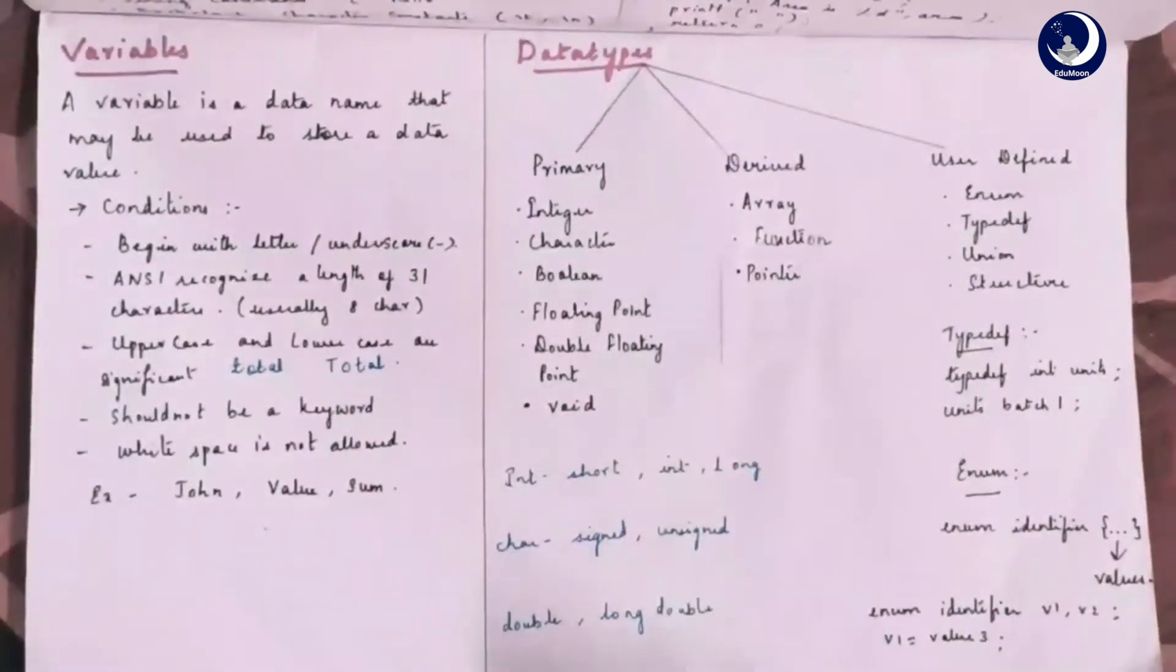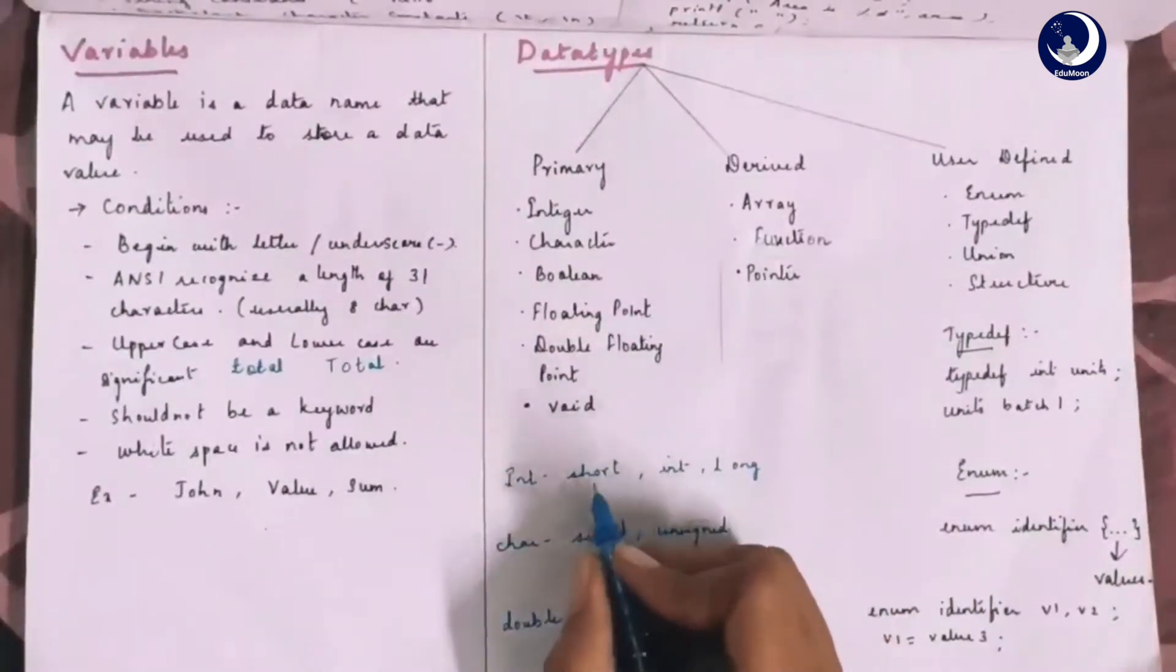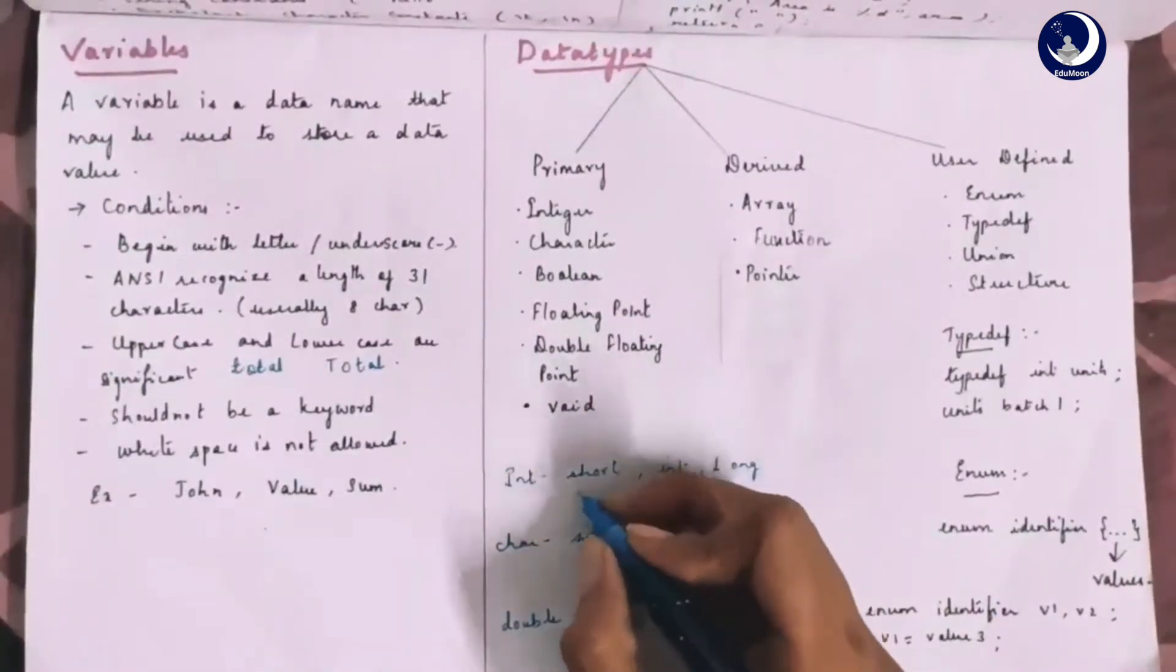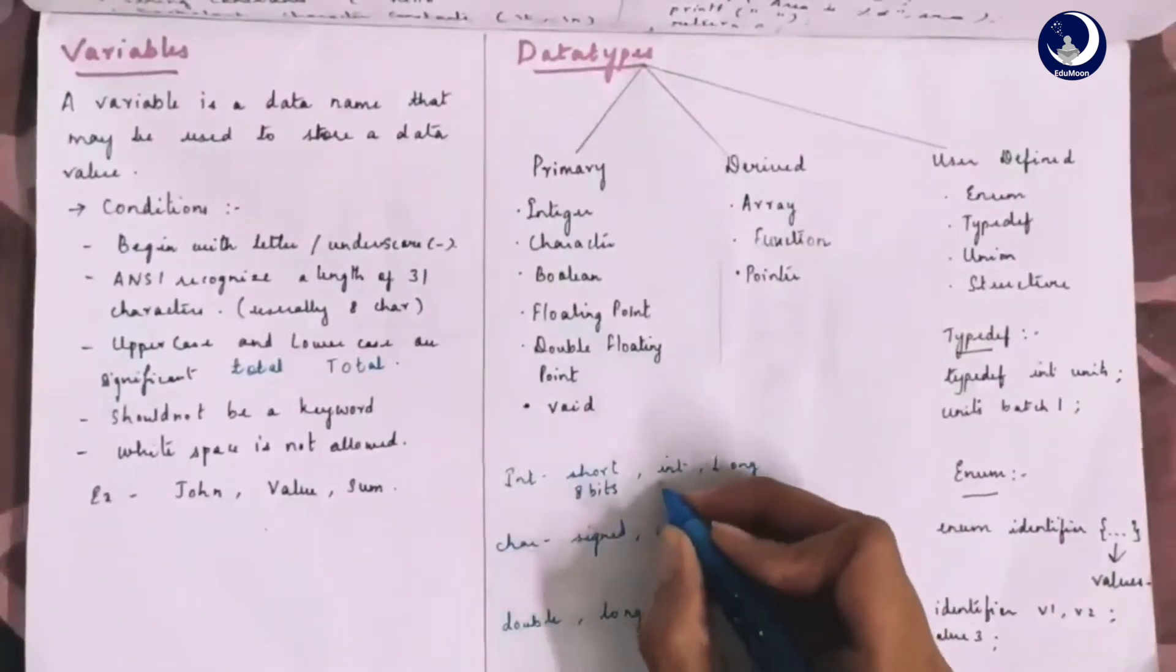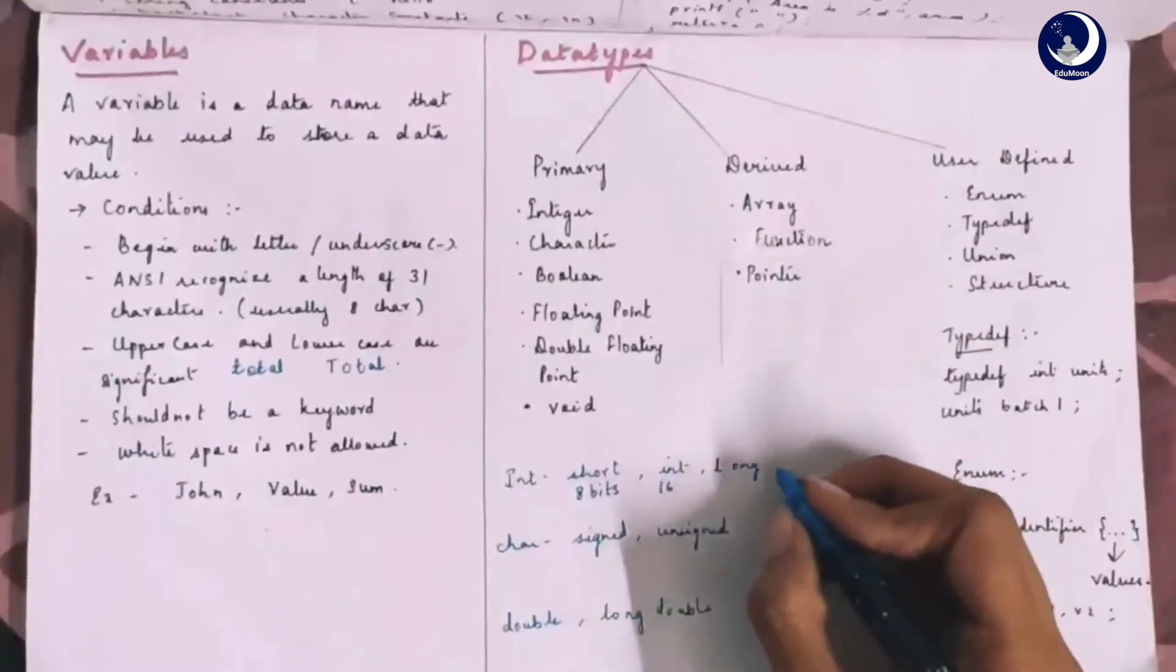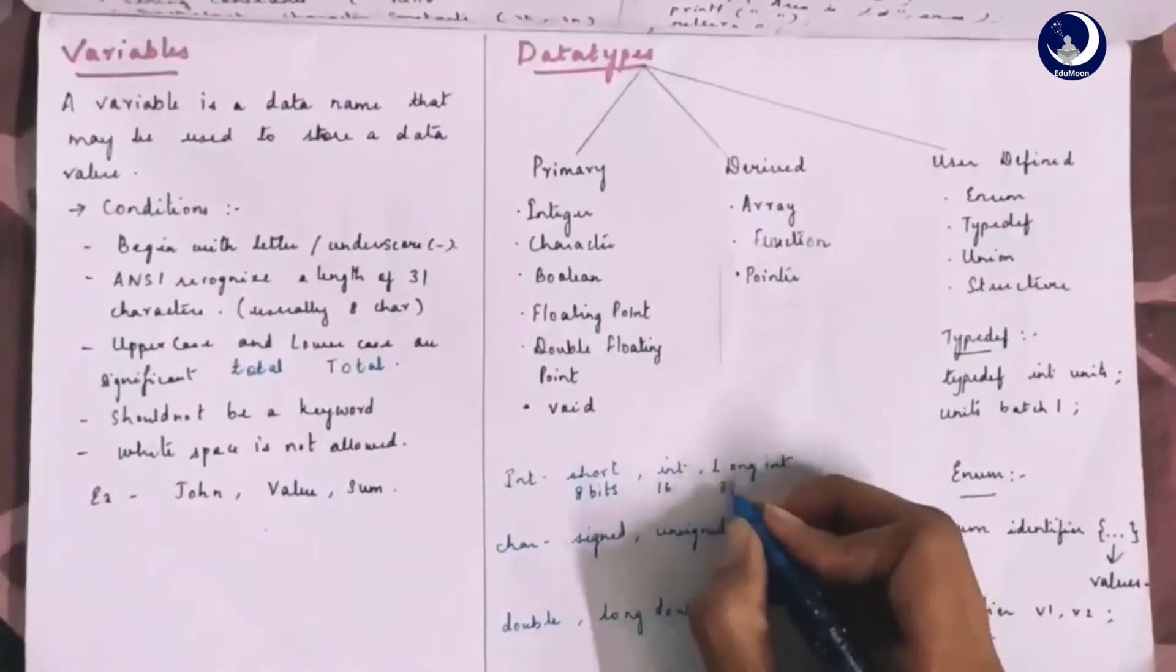Talking about integer data type, C has three classes of integer storage, namely short int, int and long int in both signed and unsigned forms. The size of short int is 8 bits or 1 byte and that of int is 16 bits or 2 bytes and that of long int is 32 bits or 4 bytes.